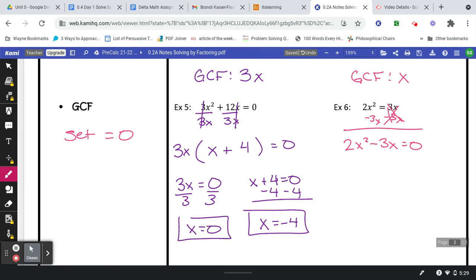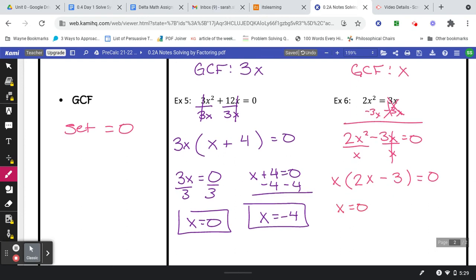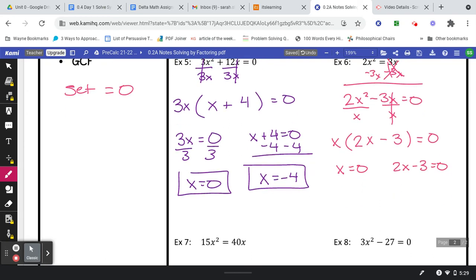Divide both of those by X, put the X in front, and then see what's left. Here you should end up with two X minus three. Then we set each one of them equal to zero and we solve. That one's already solved. Here I'm gonna add three and divide by two.